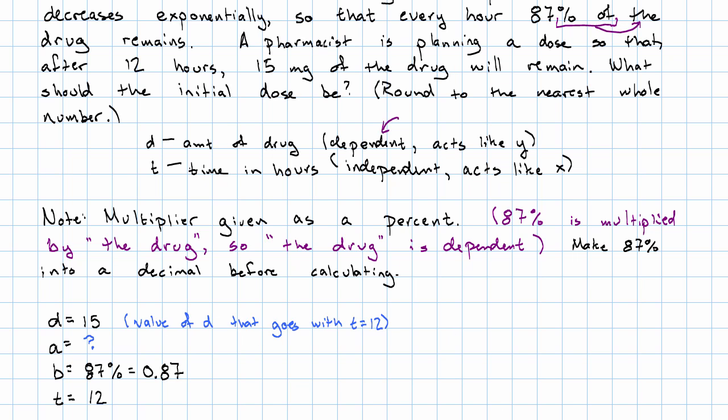So, this 15 that we end up with equals our starting amount that we don't know times the multiplier to the 12th power.